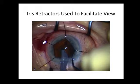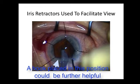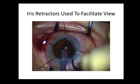Iris retractors are valuable instruments to facilitate operative views, as in this case. Where possible, the iris should be retracted well away from the moving phaco probe so that the probe does not rub and induce iris trauma. This can often best be achieved by placing at least one retractor as close to the section site as possible, and if possible, posterior to the section site to retract the iris away from the more anteriorly placed phaco probe.